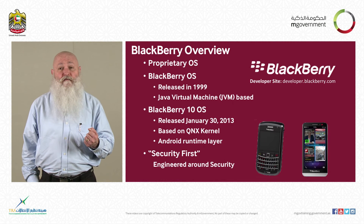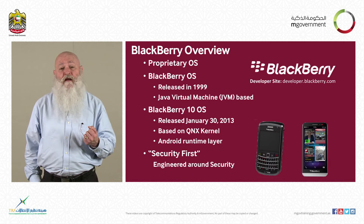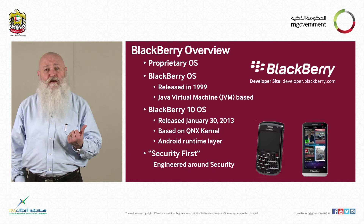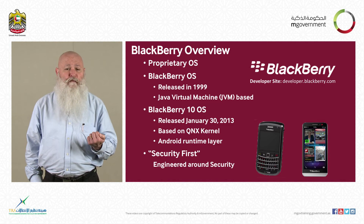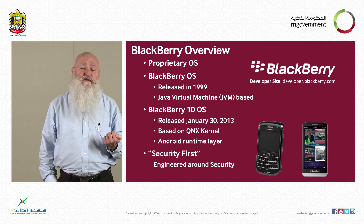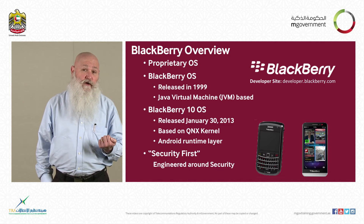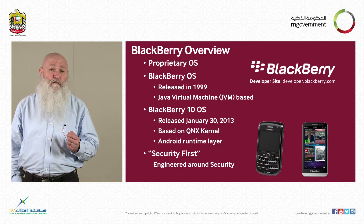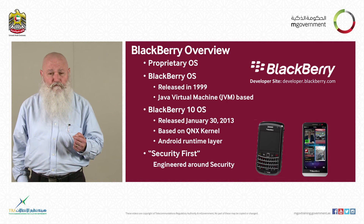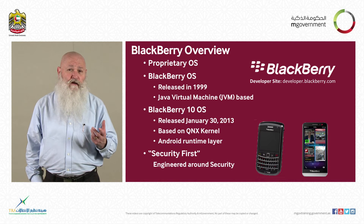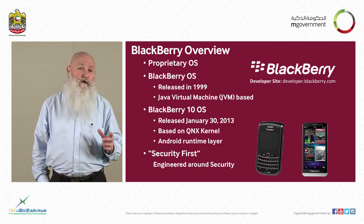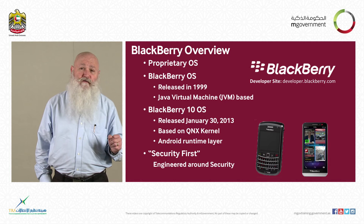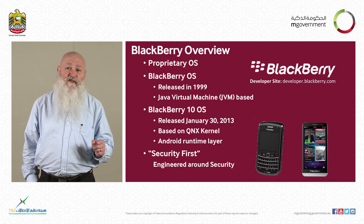The Blackberry originally was a proprietary operating system released in 1999. It was Java-based. Today, it runs on QNX, which is a Unix-based operating system. Blackberry OS 10.0 was released in January of 2013. It has an Android runtime layer, so it's possible that some applications written for Android can run on the Blackberry, although you shouldn't plan for that. Of the four platforms we consider, the Blackberry is the only one that was built originally with business and government use in mind, and it is the only one of the four where security was a primary design concern.